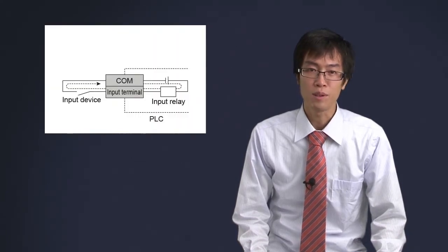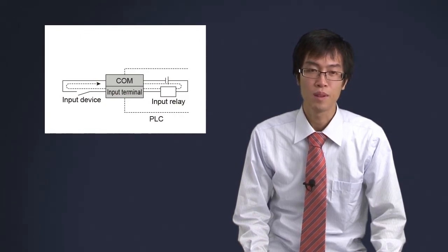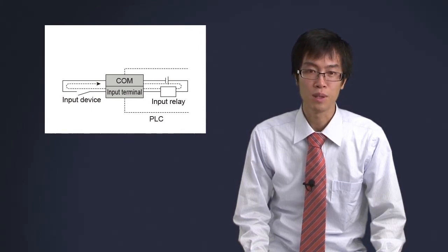An input device works when it is connected between an input terminal and its COM terminal. When the input device outputs a signal, an internal input relay transfers the signal into the PLC.